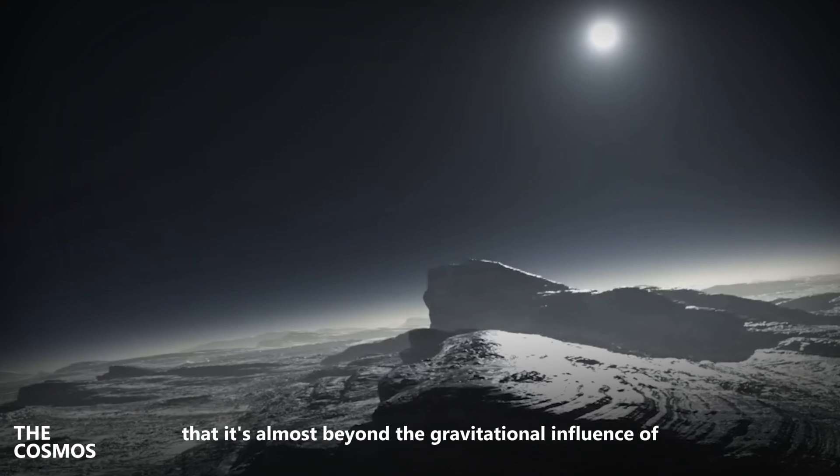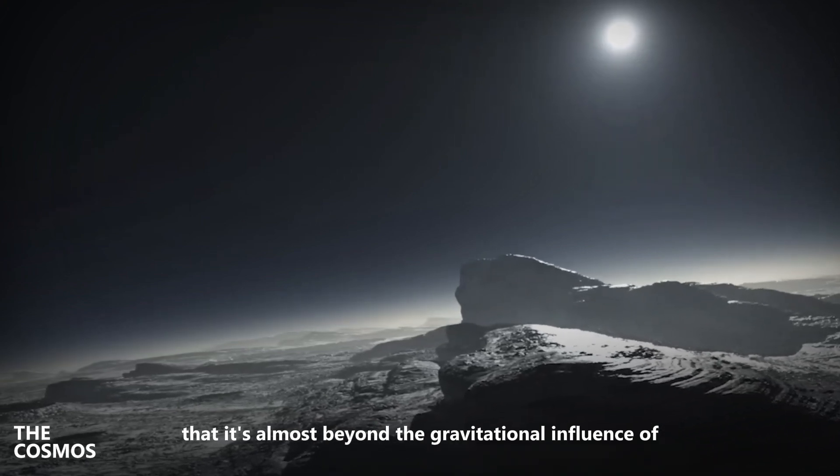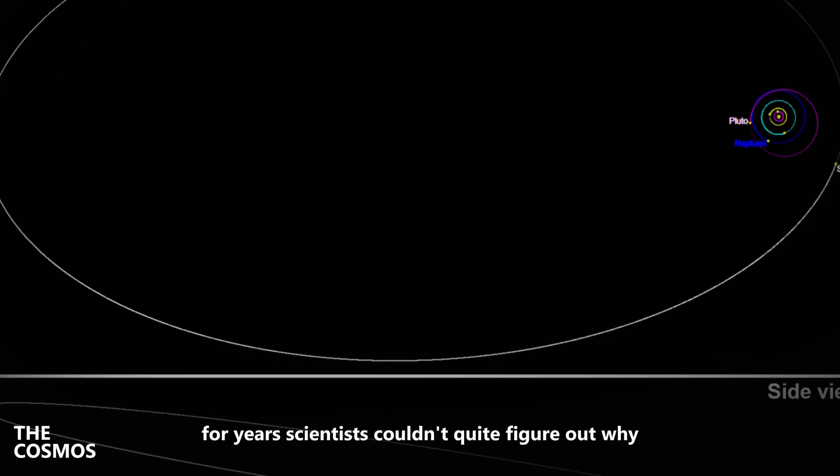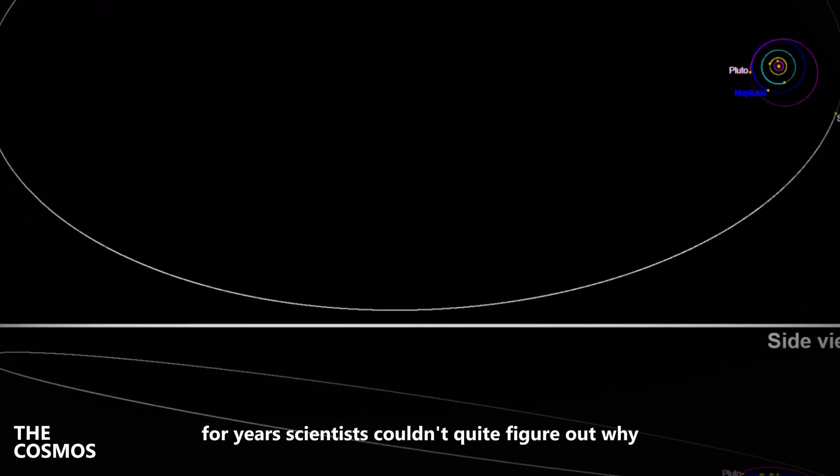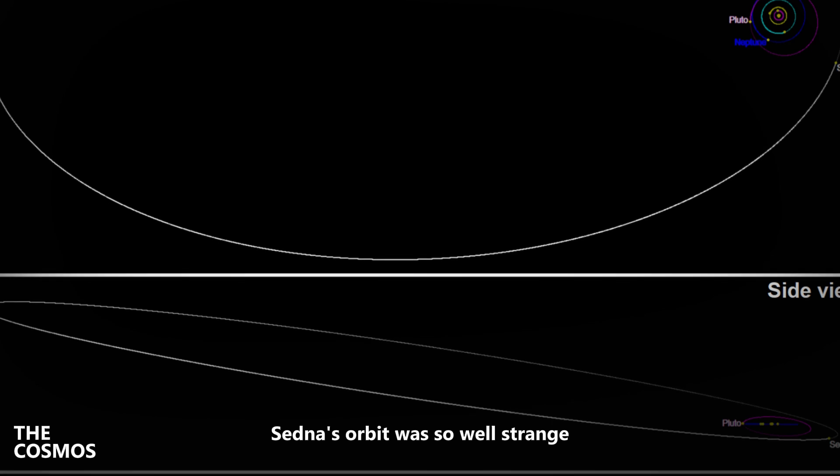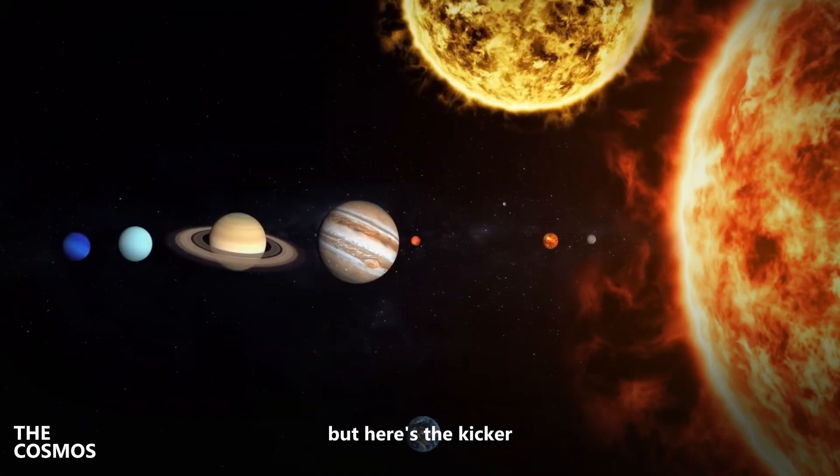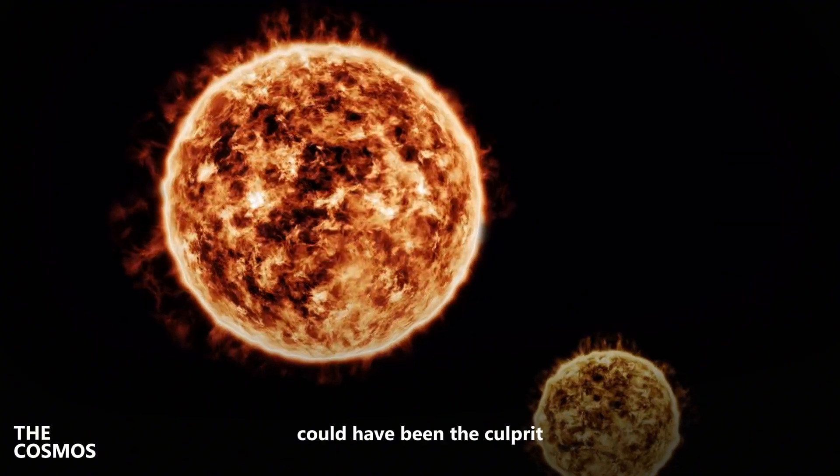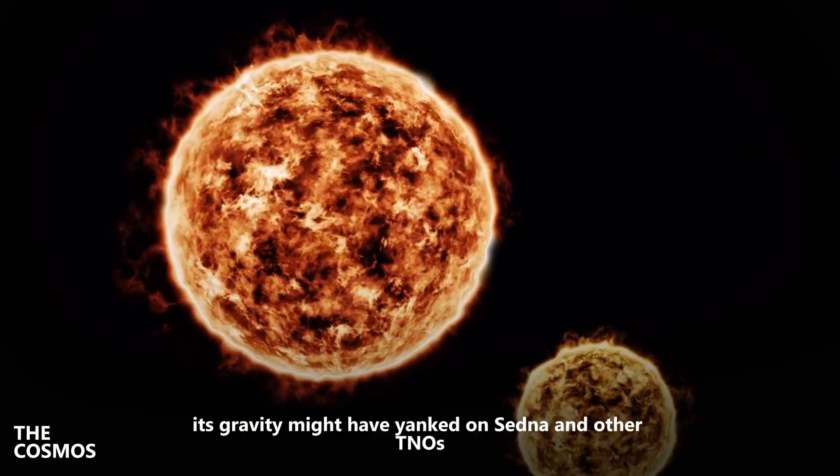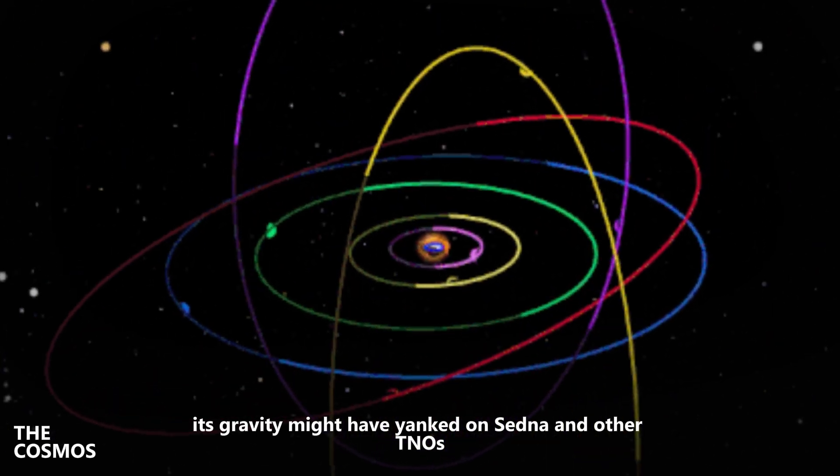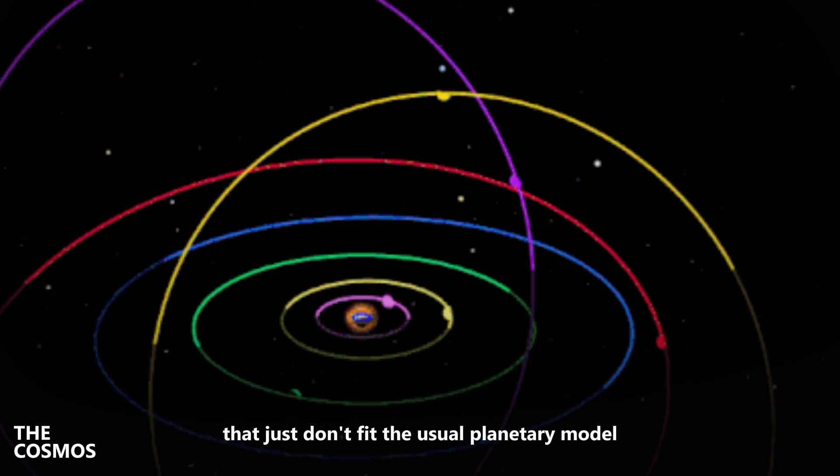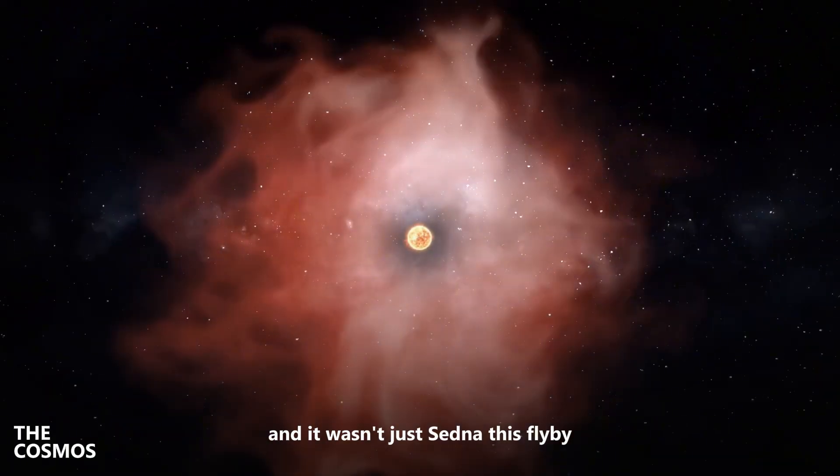distant world with an orbit that takes it as far as 937 AU from the sun. That's so far out that it's almost beyond the gravitational influence of the giant planets like Jupiter and Saturn. For years, scientists couldn't quite figure out why Sedna's orbit was so strange. But here's the kicker: this rogue star, in its brief flyby, could have been the culprit. Its gravity might have yanked on Sedna and other TNOs, pulling them into these bizarre orbits that just don't fit the usual planetary model. And it wasn't just Sedna.